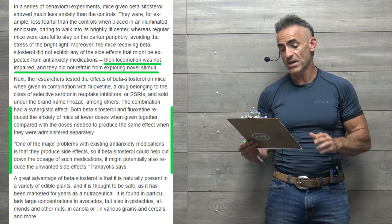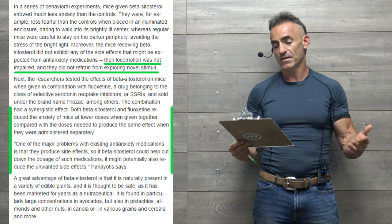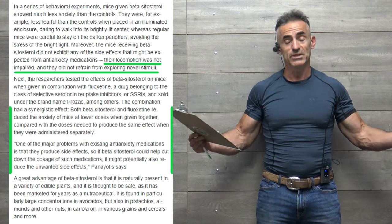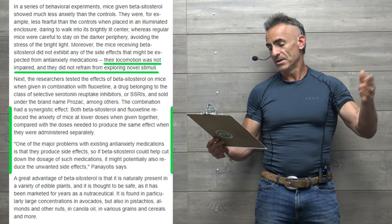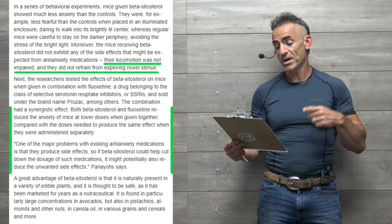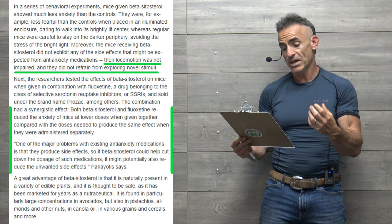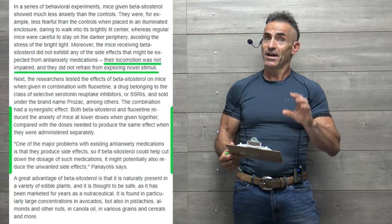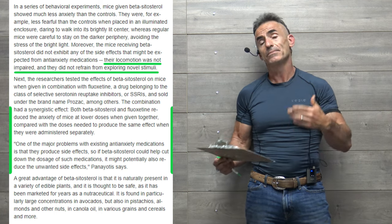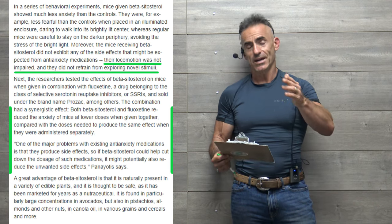Next, the researchers tested the effects of beta-sitosterol on mice when given in combination with fluoxetine, a drug belonging to a class of selective serotonin reuptake inhibitors or SSRIs, and sold in the brand name Prozac, among others. The combination had a synergistic effect. Both beta-sitosterol and fluoxetine reduced the anxiety of mice at a lower dosage when given together. As you go to the full study, I mean, they really used low dosage and it had a very powerful effect working together.